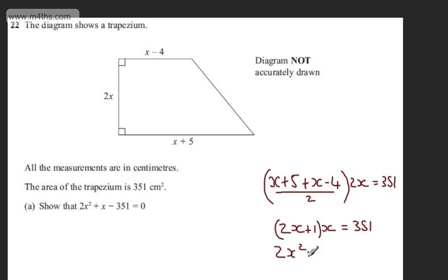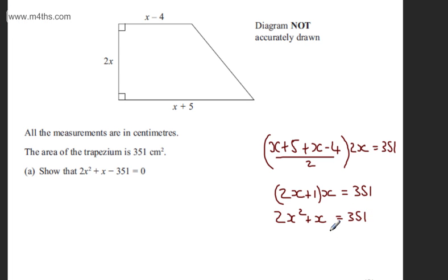If I expand the brackets, I'm going to have 2x² + x = 351. Subtracting 351 from both sides, we have 2x² + x - 351 = 0. This is now a quadratic equation in the form ax² + bx + c = 0.